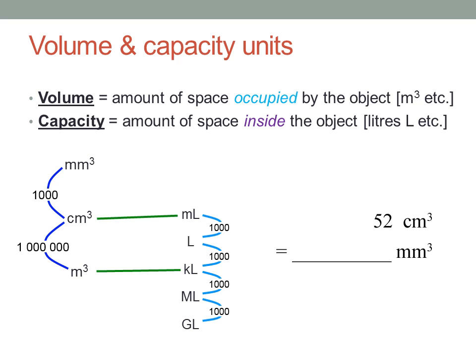Let's try a few. Fifty-two cubic centimetres is how many cubic millimetres? The new unit is smaller, so I need more. Multiply. Fifty-two times one thousand is fifty-two thousand cubic millimetres.